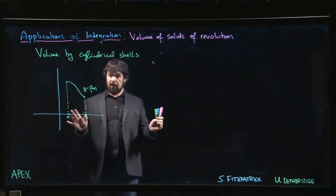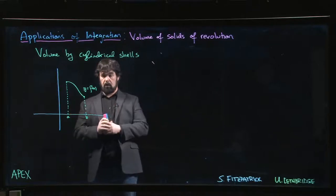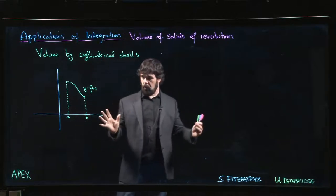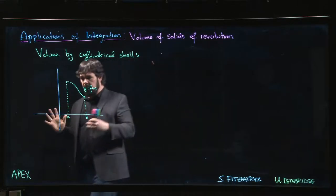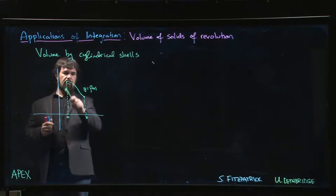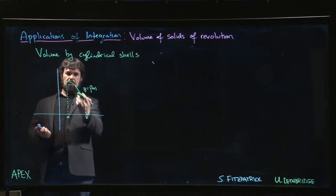We're going to look at one other method for determining volumes of solids of revolution. We've already looked at this method using discs or washers. Imagine that we have this curve here and we've got the region under the curve but above the x-axis between a and b, and we want to take that region and revolve it around one of the axes.